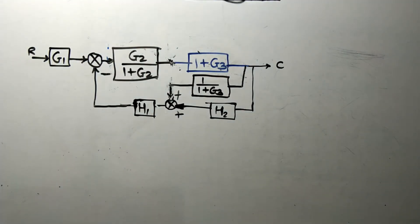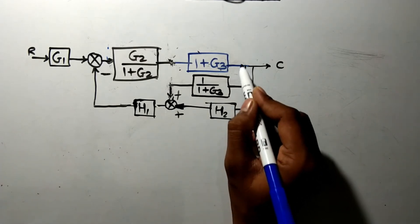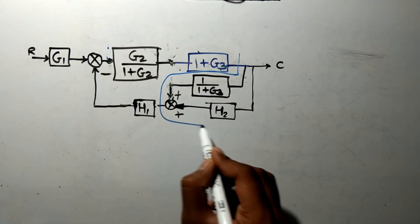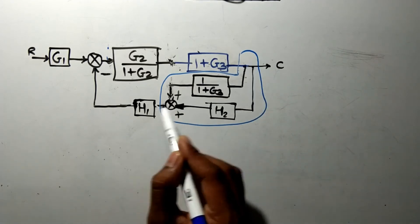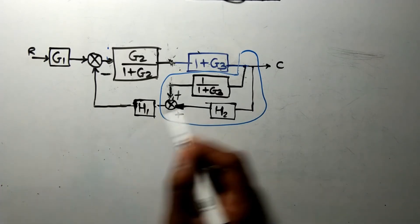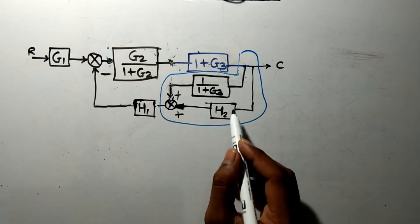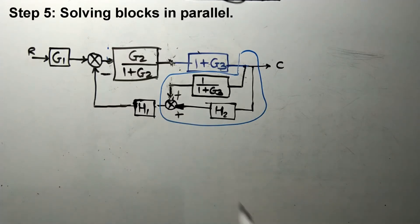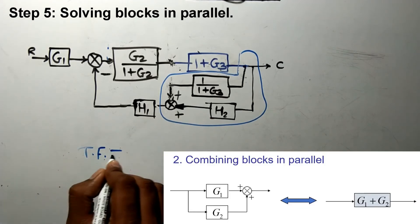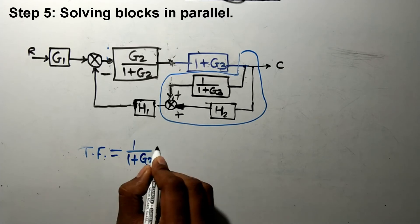The block diagram is now modified. Our next step is to recognize that this is not a feedback loop. This path is going to feedback and this path is also going to feedback, so the directions of these two functions are the same. Therefore these two blocks are in parallel, not a feedback loop. For parallel blocks the resultant transfer function is the addition of the two, so it is 1 upon (1 plus G3) plus H2.